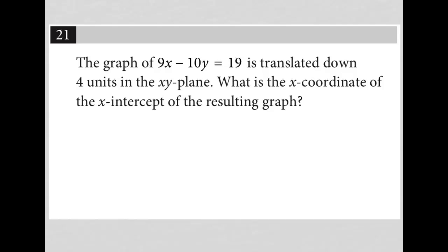This question says the graph of 9x minus 10y equals 19 is translated down four units in the xy plane. So what I'm going to do is convert this standard form for the equation of the graph into the slope intercept form for the equation of the graph.